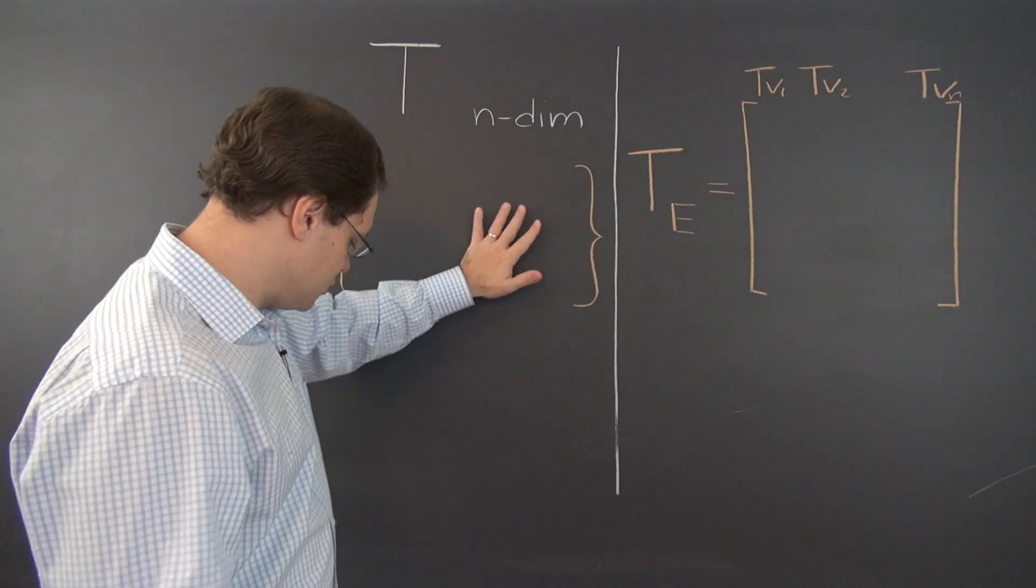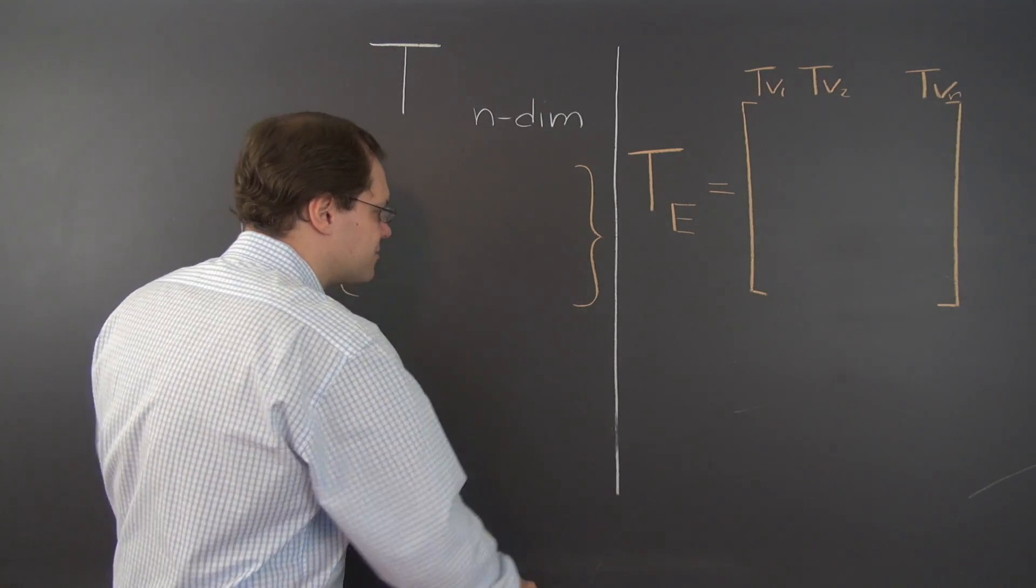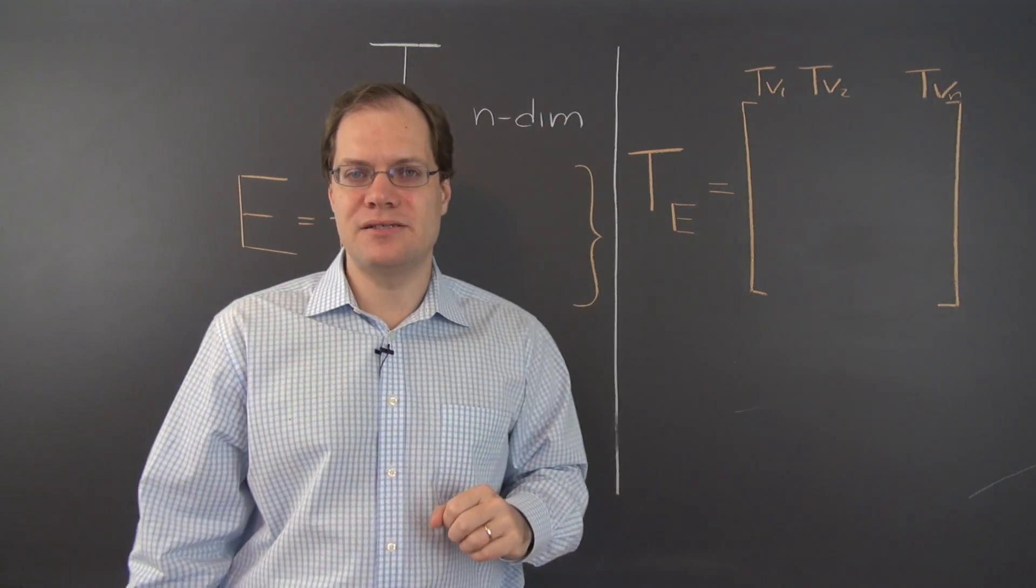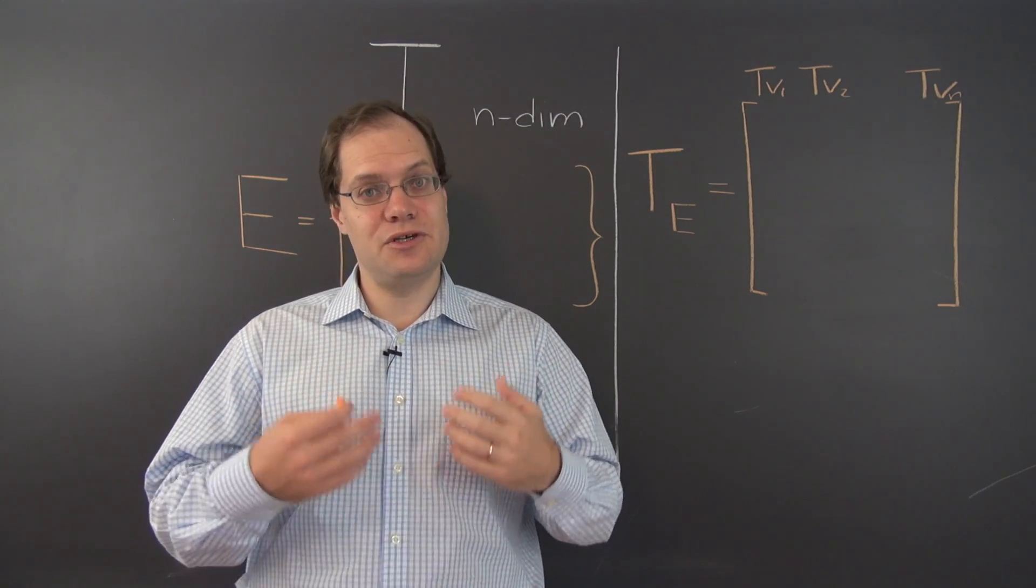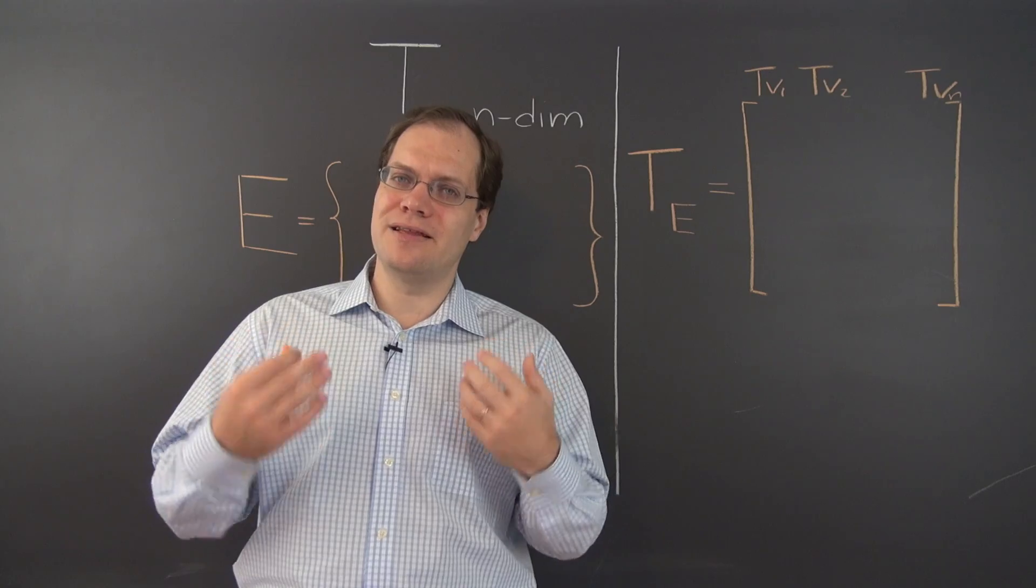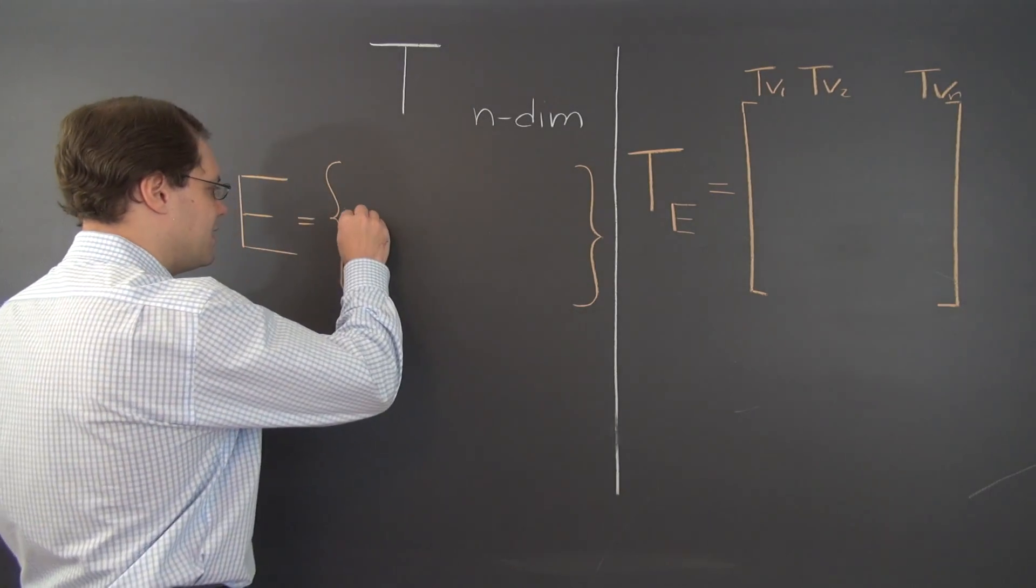Now what are we going to do? We're going to pick an eigenbasis. In other words, we'll populate this basis with the eigenvectors of the linear transformation. Now we usually denote eigenvectors by the letter V. So let's do that now.